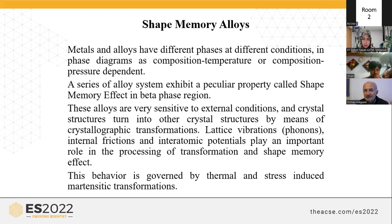Metals and alloys have different phases at different conditions in the phase diagram, as composition, temperature, or pressure dependent. A series of alloy systems exhibit a peculiar property called the shape memory effect in the beta phase region. These alloys are very sensitive to external conditions and their crystal structures turn into other crystal structures by means of crystallographic transformations.